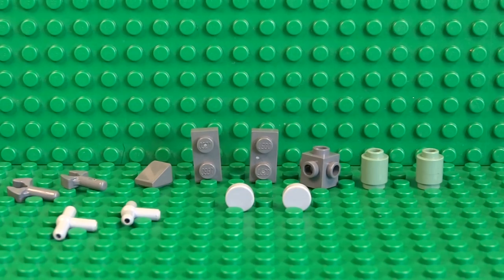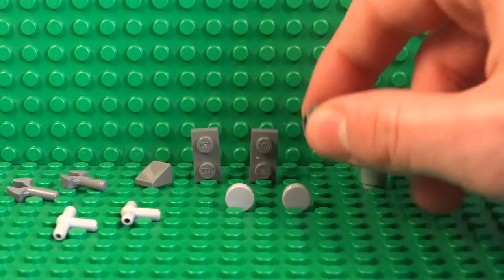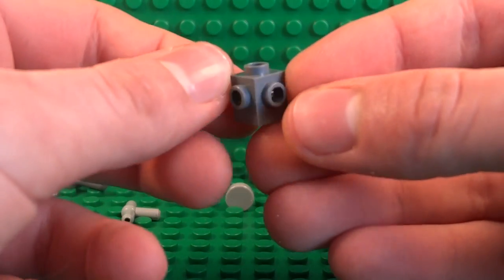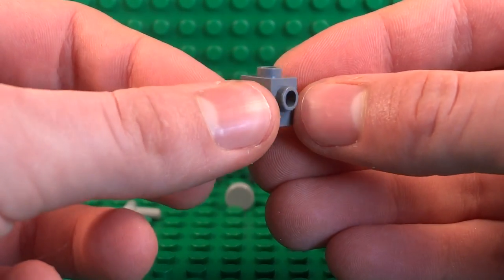Okay, so next we'll build the legs of the Big Daddy, and again here are the pieces you're going to need to build those. So once you have your pieces you can start by using this 1x1 brick with the studs on five sides.